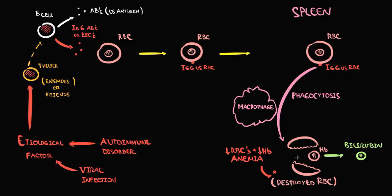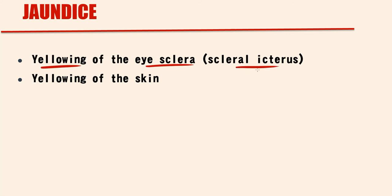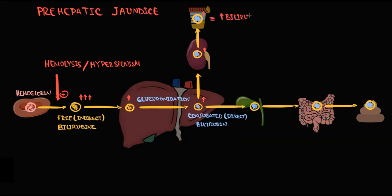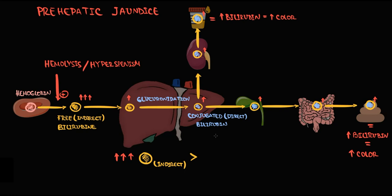In the bloodstream, hemoglobin is degraded to unconjugated bilirubin. Increasing unconjugated bilirubin causes jaundice, which manifests with yellowing of the eye's sclera — so-called scleral icterus — and yellowing of the skin. Unconjugated bilirubin is then delivered to the liver, which converts it into conjugated bilirubin. Conjugated bilirubin is excreted via urine and bile. Because there is a large amount of unconjugated bilirubin, the liver produces a large amount of conjugated bilirubin, and increasing conjugated bilirubin causes darkening of the urine, giving it a dark color.